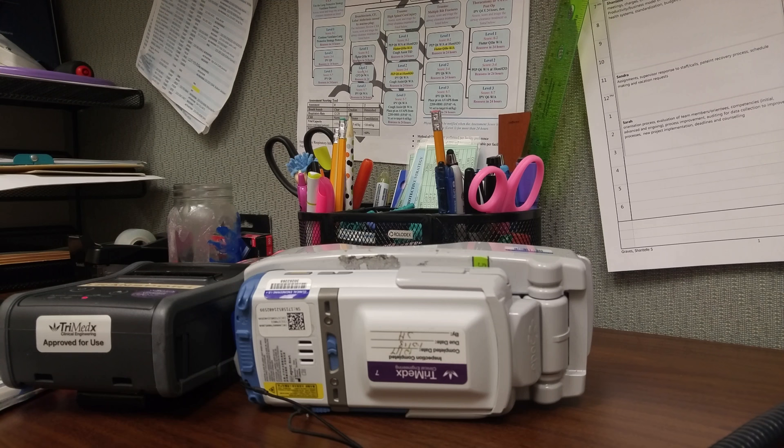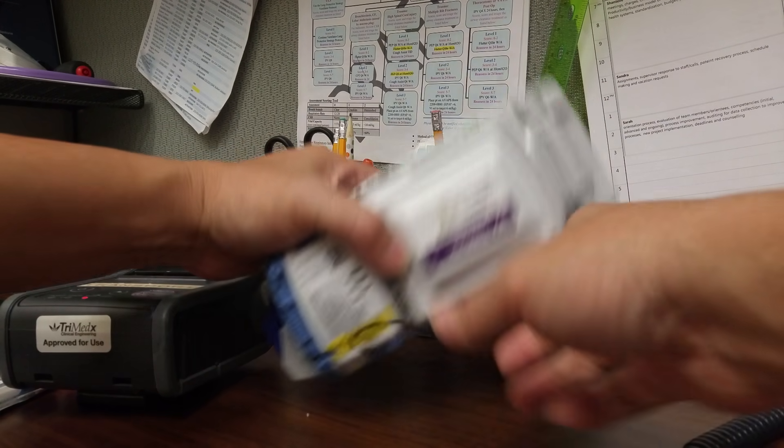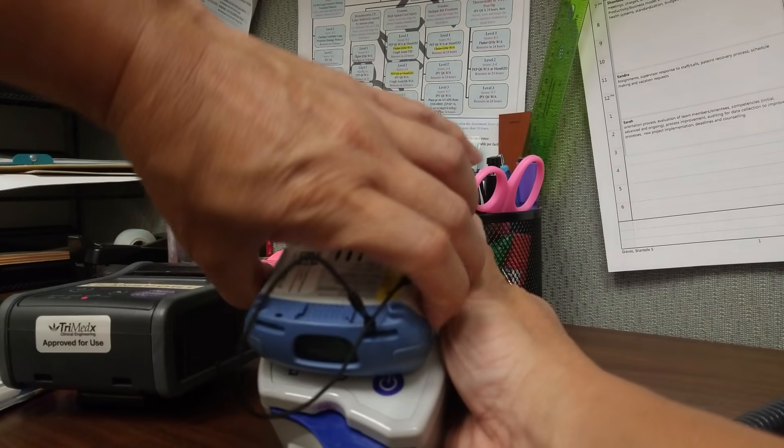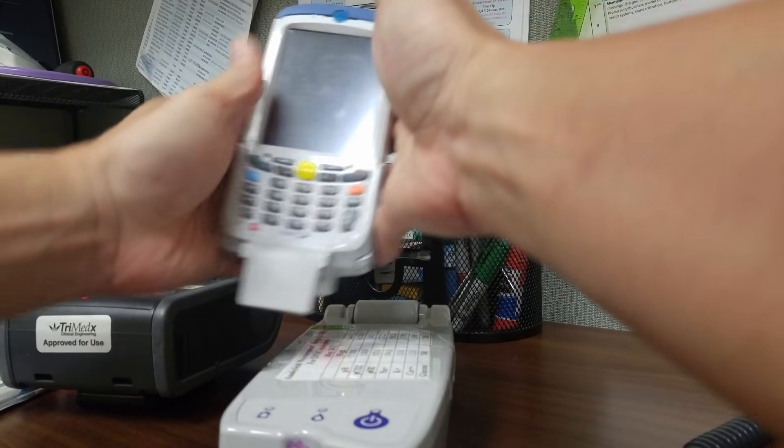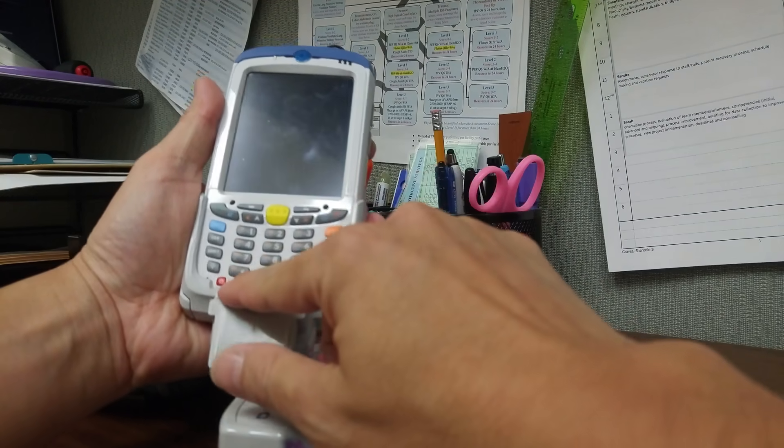All right, let's talk about the EPOC and how to use it to run a gas. This is the EPOC machine itself. You have to flip it open. The monitor comes off the base. There's a red on button.